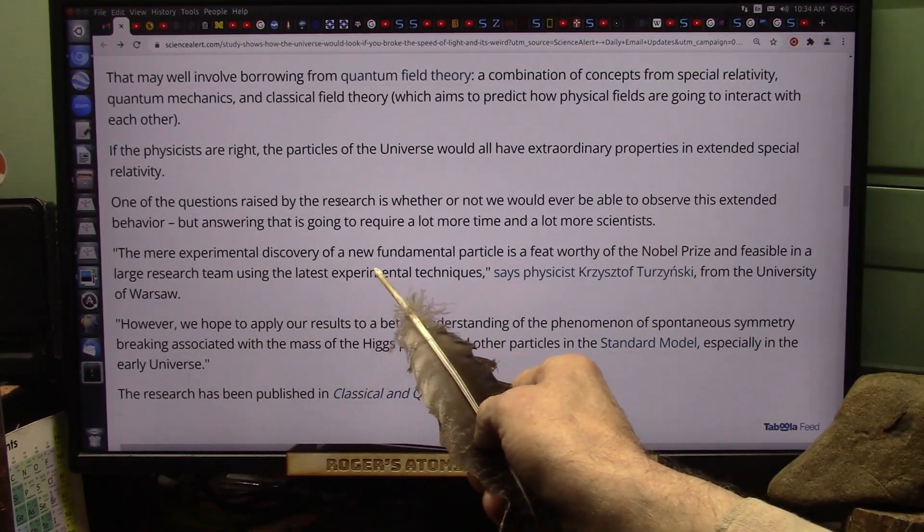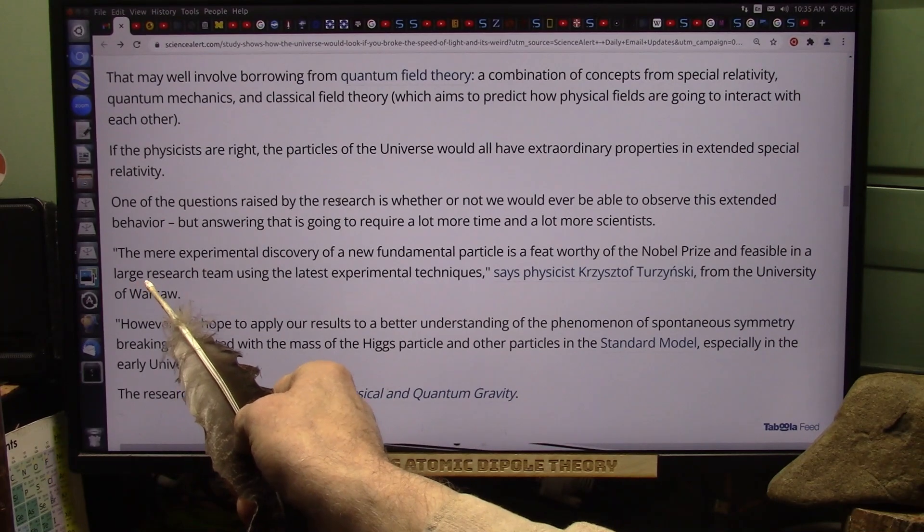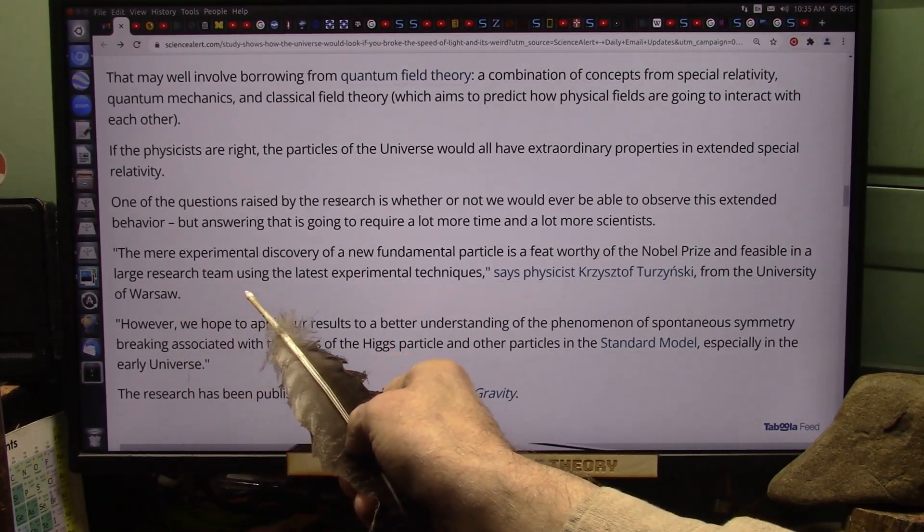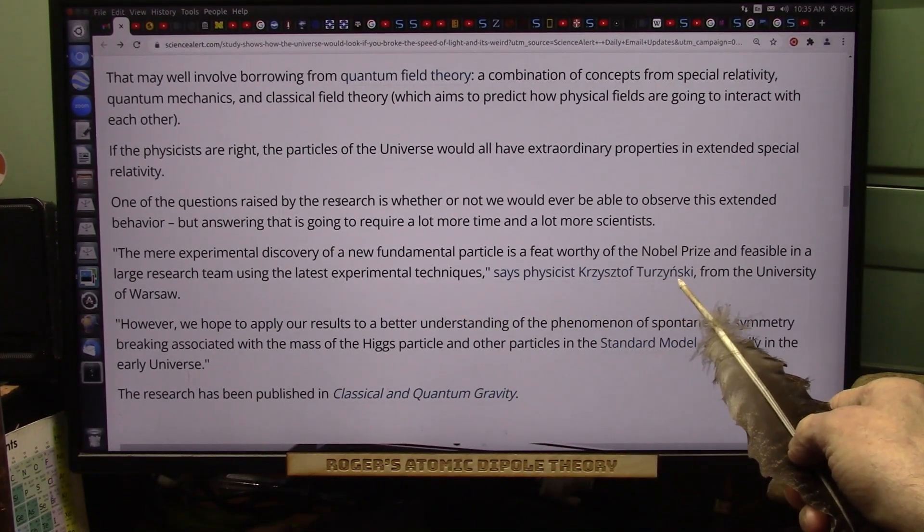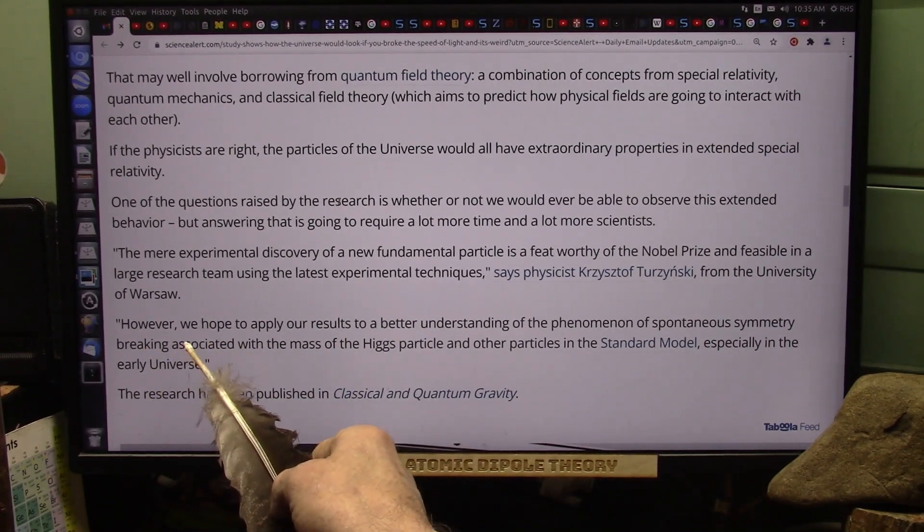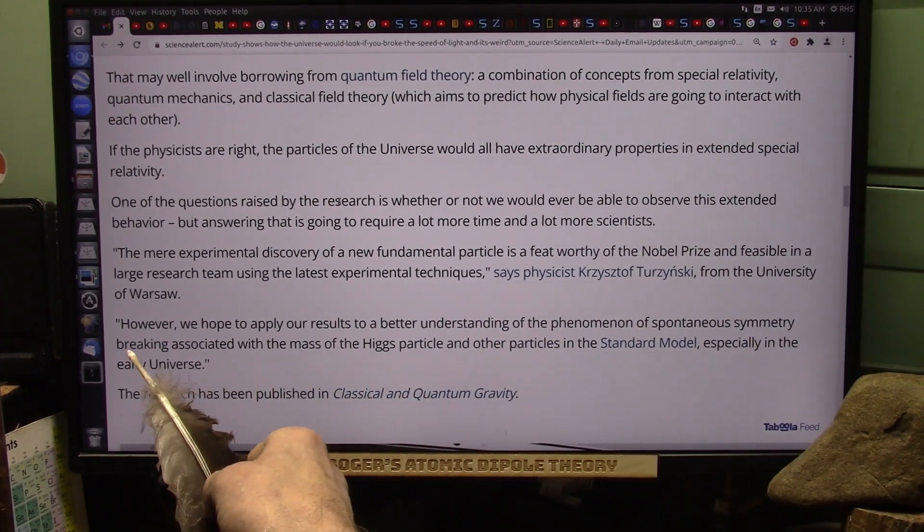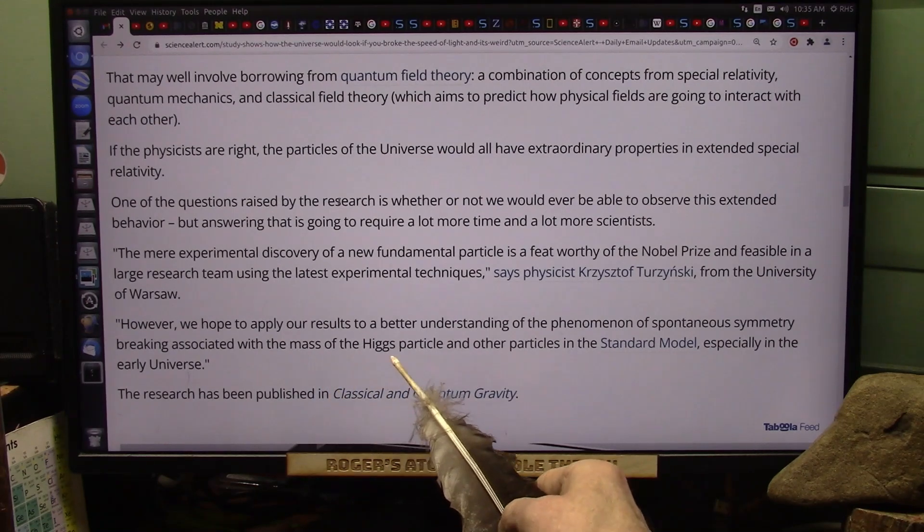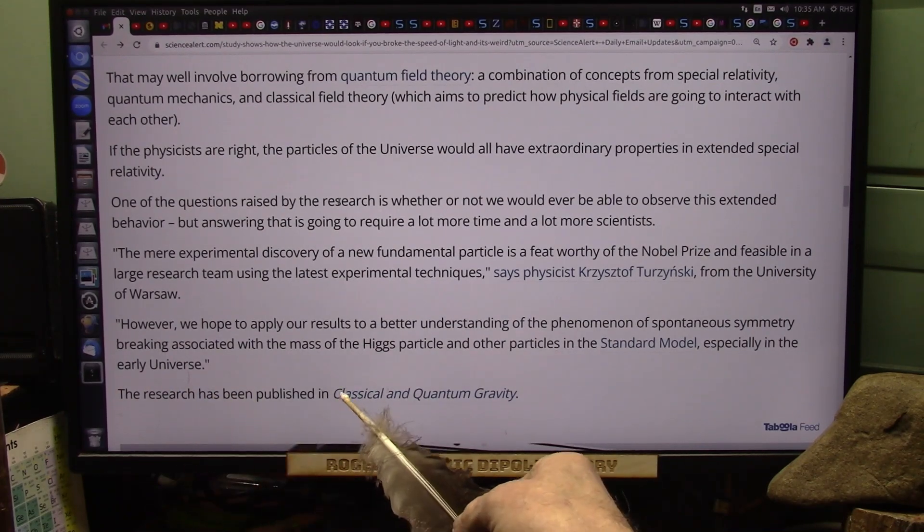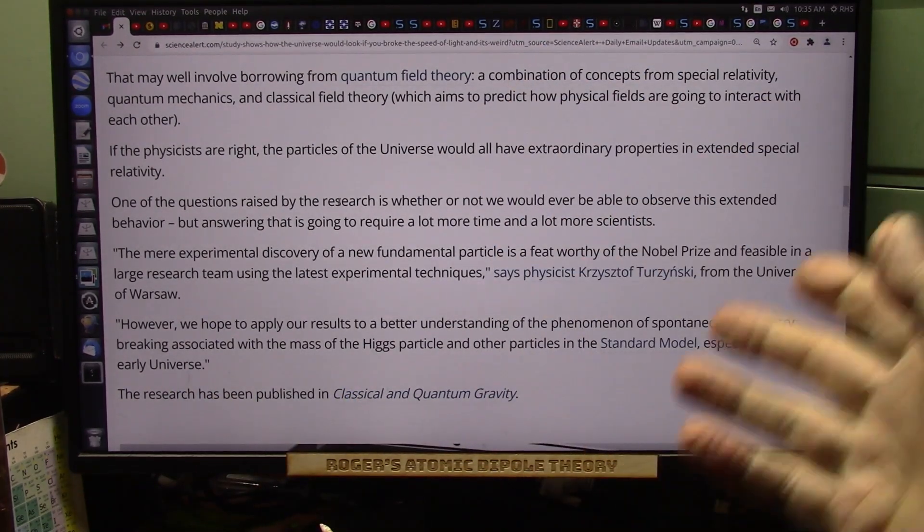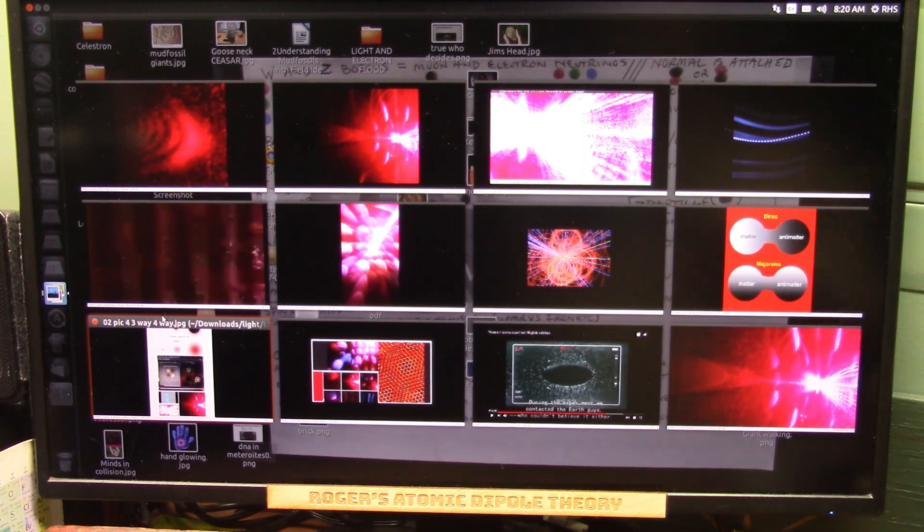The mere experimental discovery of a new fundamental particle is a feat worthy of the Nobel Prize and feasible in a large team, a large research team using the latest experimental techniques, says physicist Christoph Terskinski from the University of Warsaw. However, we hope to apply our results to a better understanding of the phenomena of spontaneous symmetry breaking associated with the mass of the Higgs particle and other particles in the standard model, especially in the early universe. This is in classical and quantum gravity. They published this. Now, we did all this stuff, so it's all over.